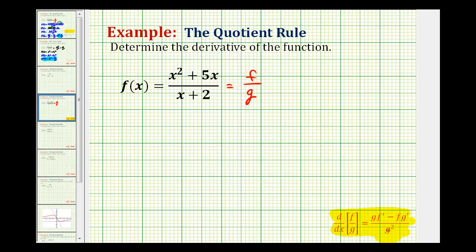divided by g squared. Or we can say the denominator times the derivative of the numerator minus the numerator times the derivative of the denominator all over the denominator squared.